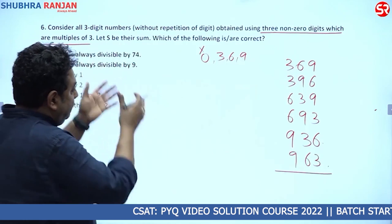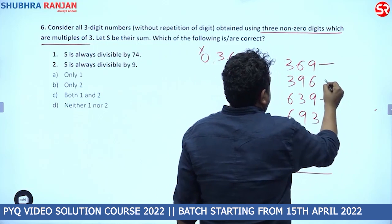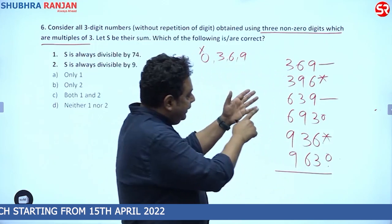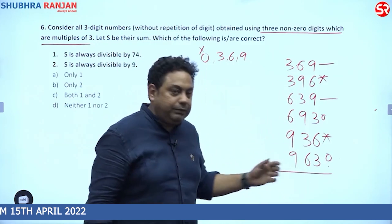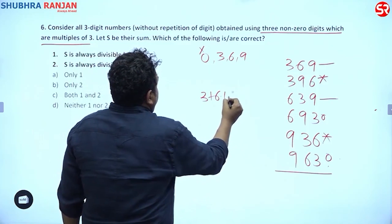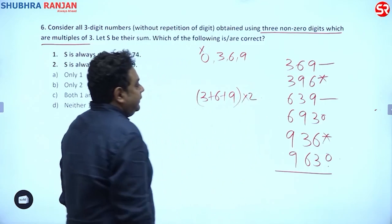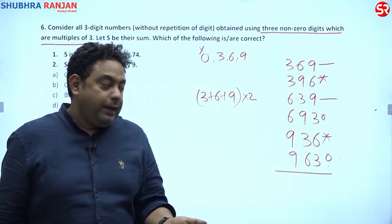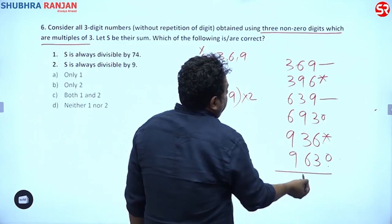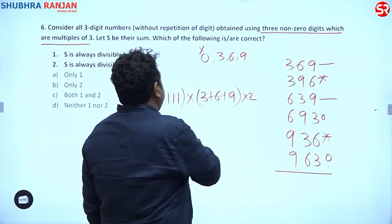Rather than performing the whole sum directly, notice that 9, 6, and 3 each appear exactly two times in every position. Every line has the same digit pattern, so we can use the factor 111 to represent the place values, giving us a clean formula for the sum.